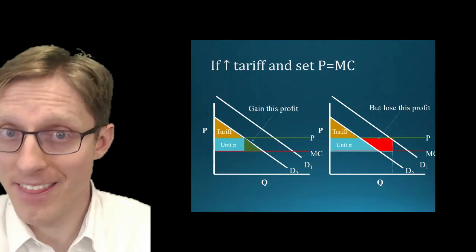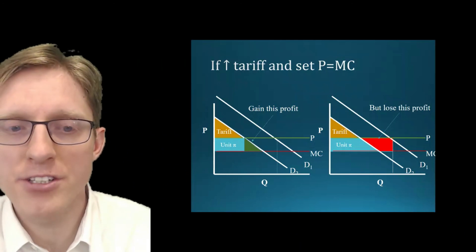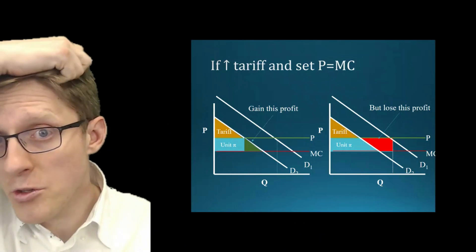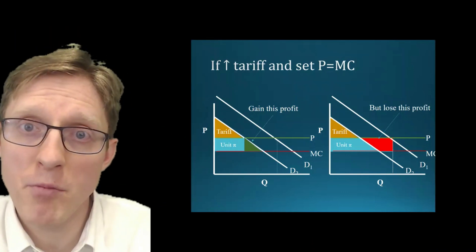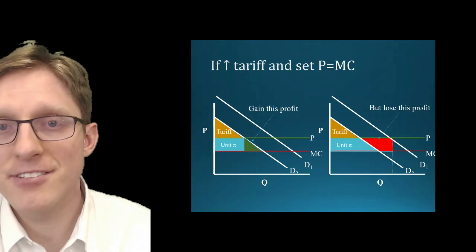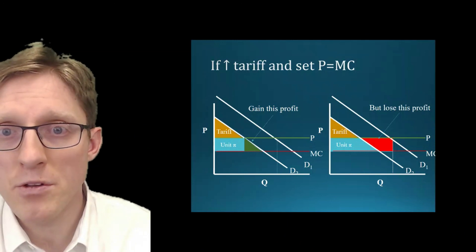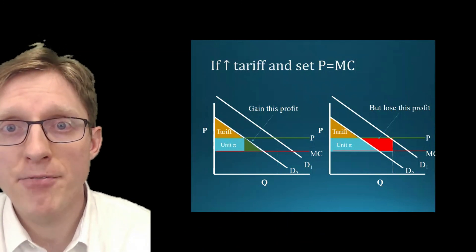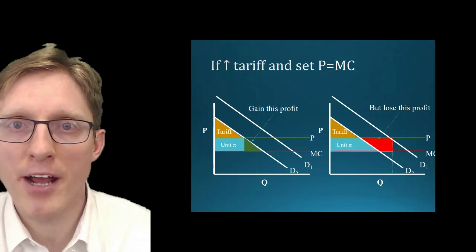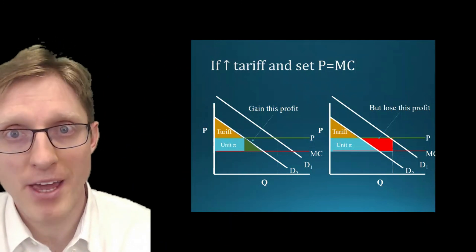We can see from the graph that the red area — the lost profits from the person with higher demand — is larger than the green area, which is the gained profits from the person with lower demand. So overall, when you have these two individuals in the market, lowering the price all the way to marginal cost actually reduces overall profits. This is generally going to hold: it's always optimal to charge some per unit price above marginal cost when you have two individuals with different demands. The finding that price should equal marginal cost with a two-part tariff only works when all individuals have exactly the same inverse demand function.